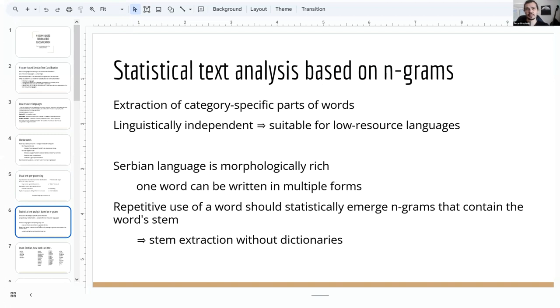Statistical text analysis, based on n-grams, enables further text analysis and extraction of category-specific parts of words, regardless of their lexical form. It is based on counting the occurrences, and as such, is linguistically independent, which makes it suitable for the low-resourced languages. Serbian language is morphologically rich, as one word can be written in several forms, using a variety of affixes for conjugation, declination, and so on. Repetitive use of a word is expected to statistically emerge n-grams that contain the word's stem, as opposed to n-grams that contain prefixes and suffixes, which effectively extracts stems or parts of stems, and allows the implementation of stem-based document feature vectors without lexical resources, independent of language.